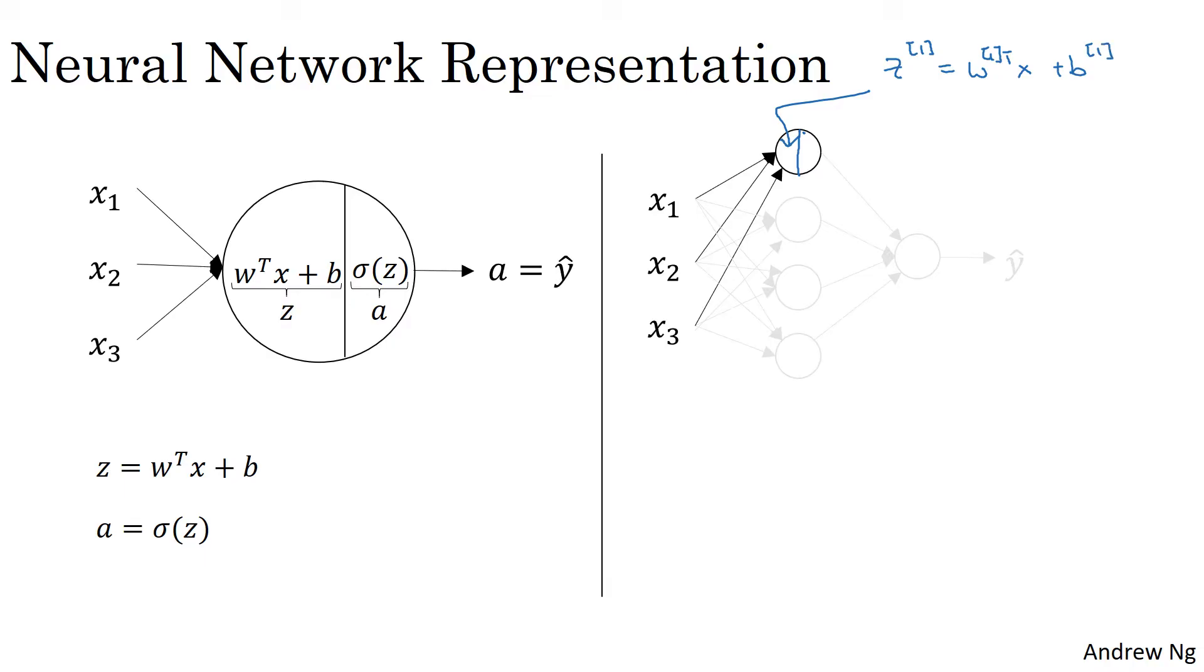And the notation we'll use is these are all quantities associated with the first hidden layer. So that's why we have a bunch of square brackets there. And this is the first node in the hidden layer, so that's why we'll have a subscript one over there. So first it does that, and then the second step is it computes a11 equals sigmoid of z11.